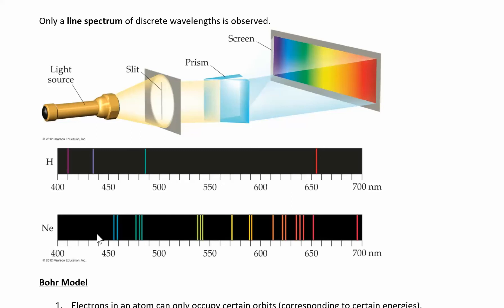And so Bohr, Niels Bohr, was trying to explain why we see these certain line spectra. And he basically came up with this idea.